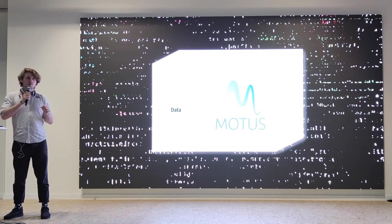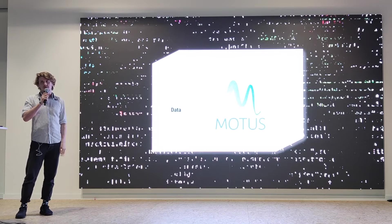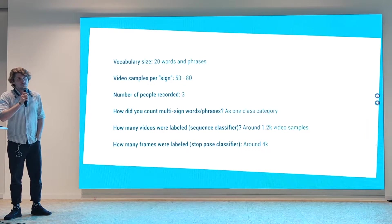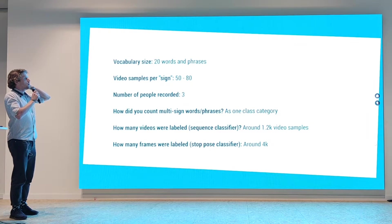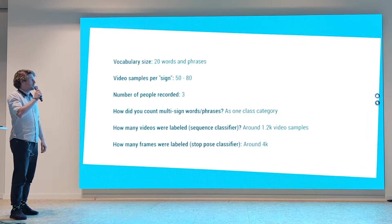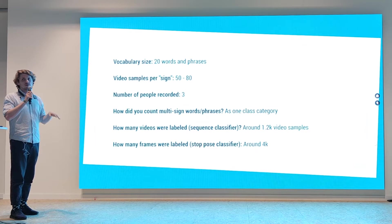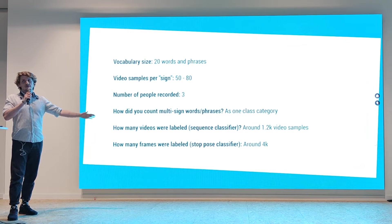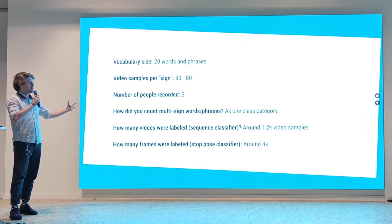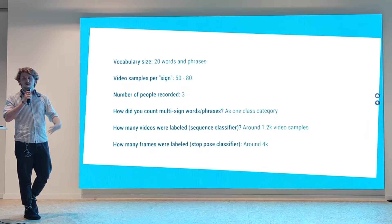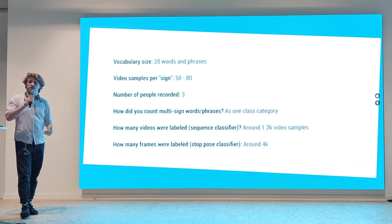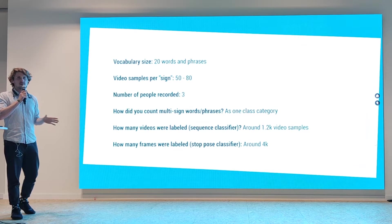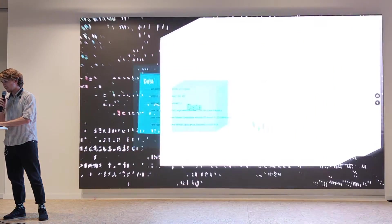For the data: I was recording by myself and was also supported by a Deaf Association. I got involved in collaboration with them. We started with a simple dictionary of about 10 to 20 phrases, and for each phrase we got from 50 to 80 videos. We had three people virtually recording, so it's not fully biased toward just me recording those videos. We have over 1,200 labeled videos. My problem breaks down into two models: the first one detects where a sequence actually ends — a stop-post classifier — and the other one, given a sequence, classifies what was performed in that sequence.